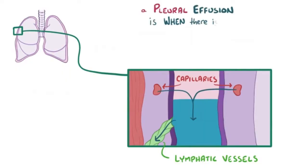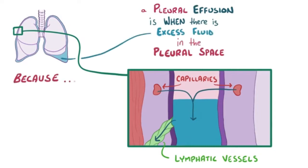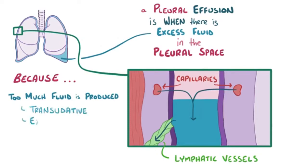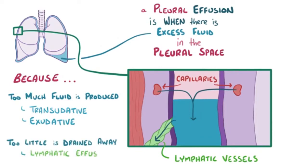Pleural effusion is when there is excess fluid in the pleural space. This is either because there is too much fluid being produced by the body due to a transudative or exudative effusion, or it could also be due to the lymphatic vessels being unable to effectively drain the fluid, causing lymphatic effusion.